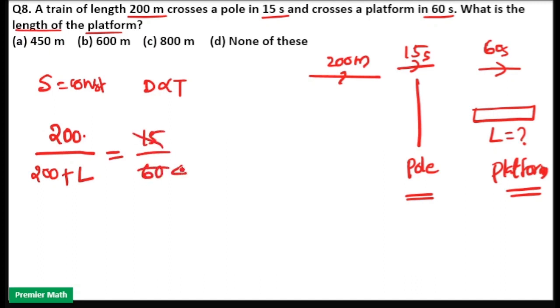15 into 4 is equal to 60. That means 200 plus L is equal to 800. That means L is equal to 600, 800 minus 200. So option b is your answer.